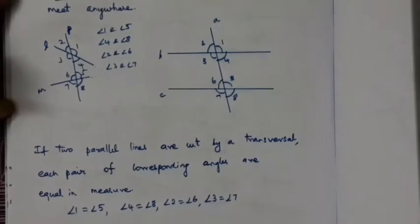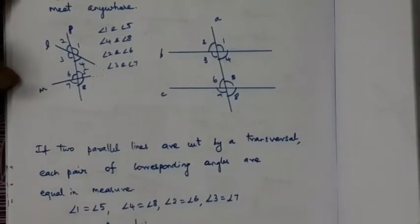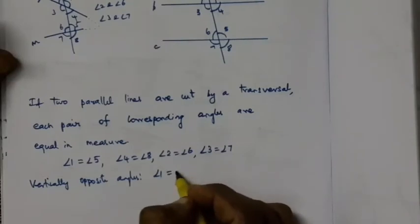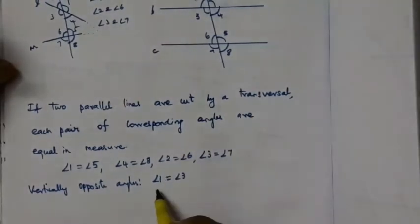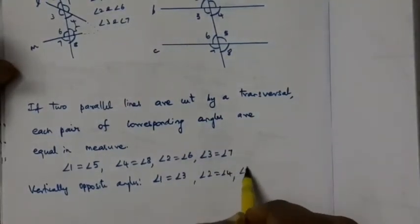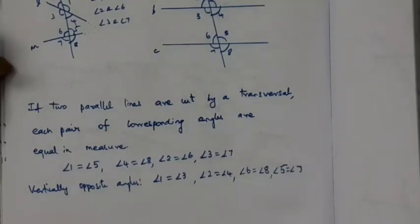We already know that vertically opposite angles are equal. The vertically opposite pairs are: angle 1 equals angle 3, angle 2 equals angle 4, angle 6 equals angle 8, and angle 5 equals angle 7.